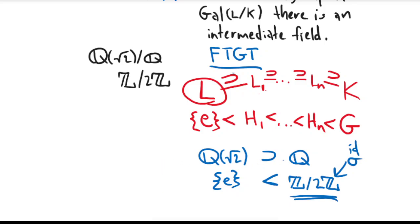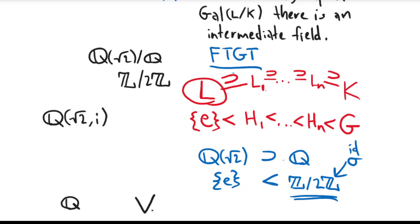You can also do more complicated examples. Like the example from the last video where Q adjoined square root of 2i was the largest field and then there was Q adjoined square root of two. In this case we figured out that the Galois group was the Klein four group V, which is a more complex group.